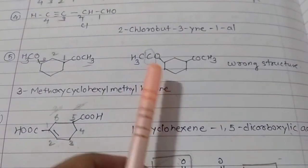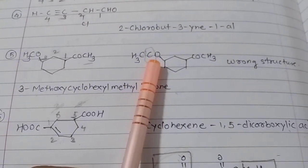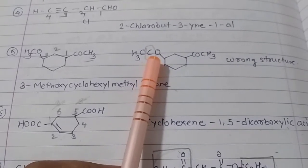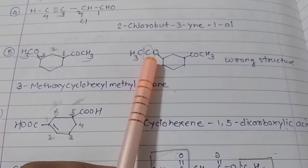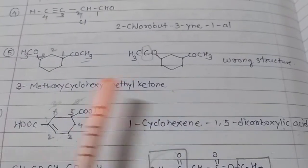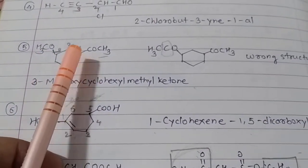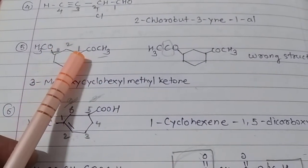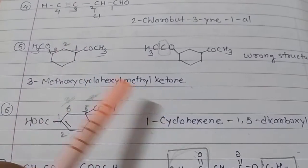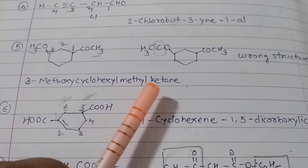The fifth one — this is a wrong structure written in the book. This carbon should not be there because every carbon makes four bonds, and this carbon is not making four bonds, so it is a printing mistake. The actual structure is a ketone with cyclohexanol on one side and a methyl group on the other. There is a substituent on the third carbon of cyclohexane: three-methoxy-cyclohexyl-methyl-ketone.